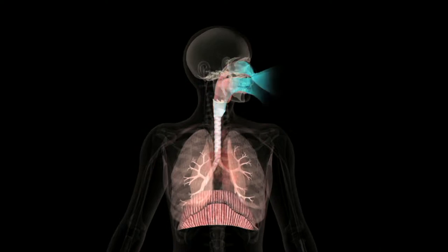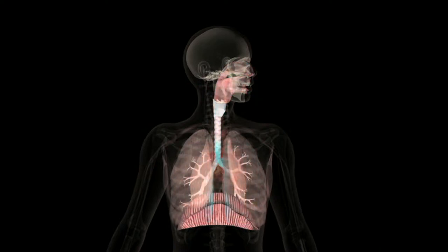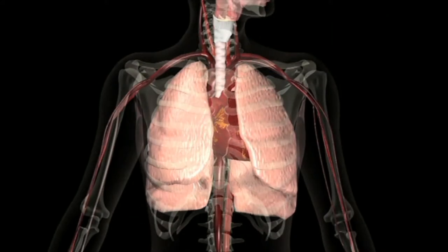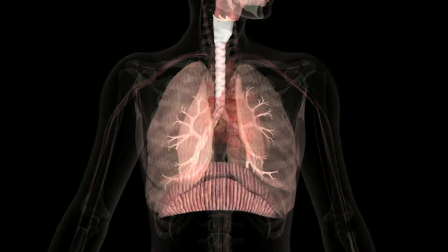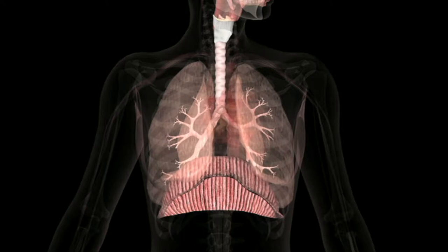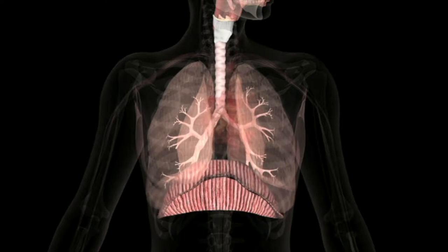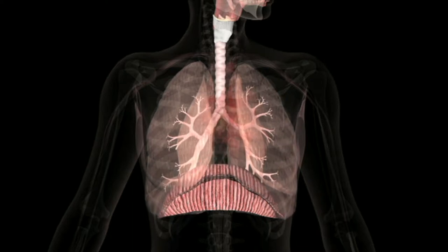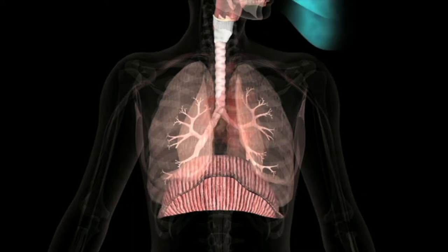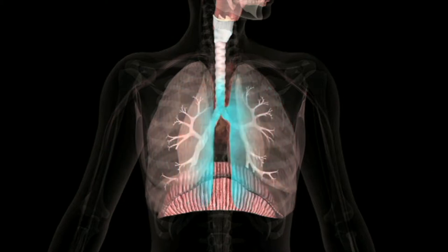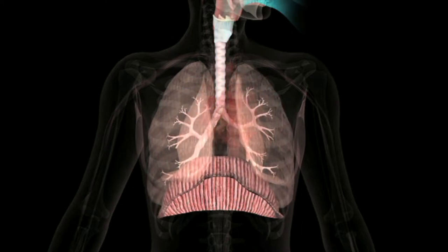At the same time, contraction of the diaphragm causes the diaphragm to move downward, increasing the vertical dimension of the thoracic cavity. This increases its volume and the volume of the lungs, also lowering air pressure in the lungs. As a result, air moves from an area of higher pressure — the external air — to an area of lower pressure: the lungs and alveoli, which are small sacs within the lungs.